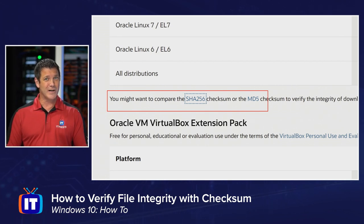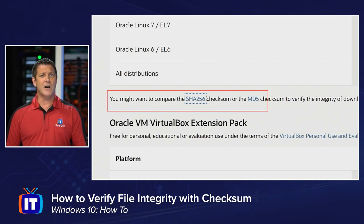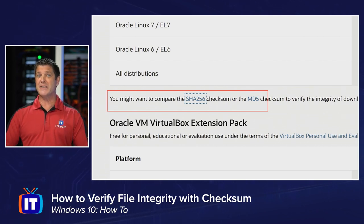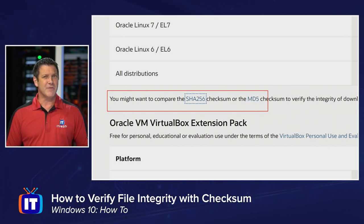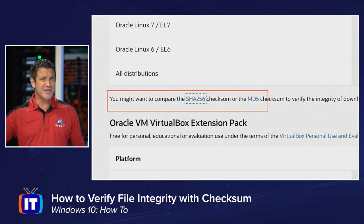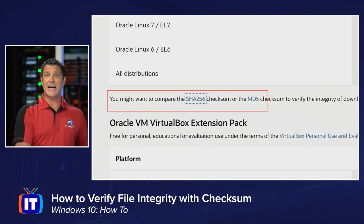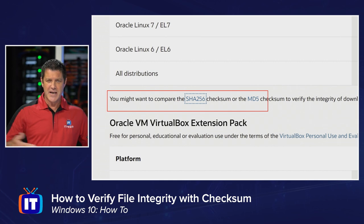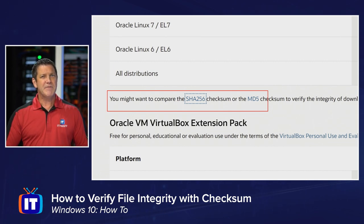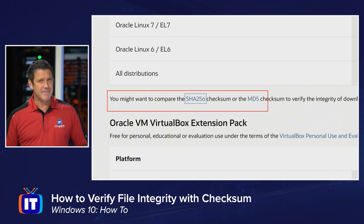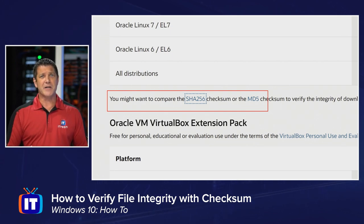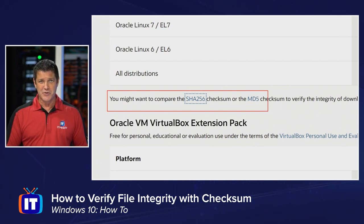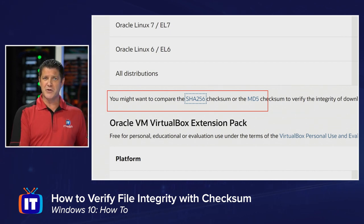They're recommending that you make sure this file hasn't been modified. They give you two different options — those are hashing algorithms. There's a mathematical formula that we run the file through to generate this value, and there are many different formulas we can use, we just have to agree on one. If the website is using SHA-256, then when I run my own check, I want to use SHA-256 and compare those values — compare apples to apples. If the website is using MD5 and I'm using SHA-256, our values aren't gonna match and that won't give me accurate results.